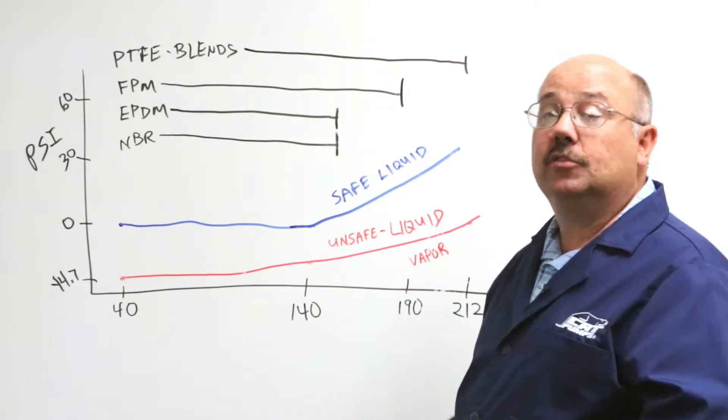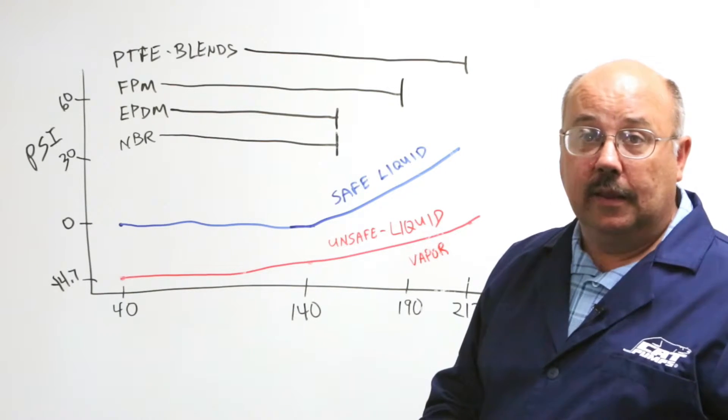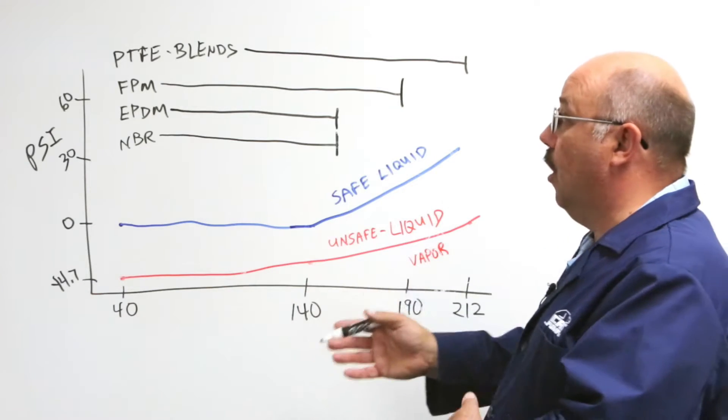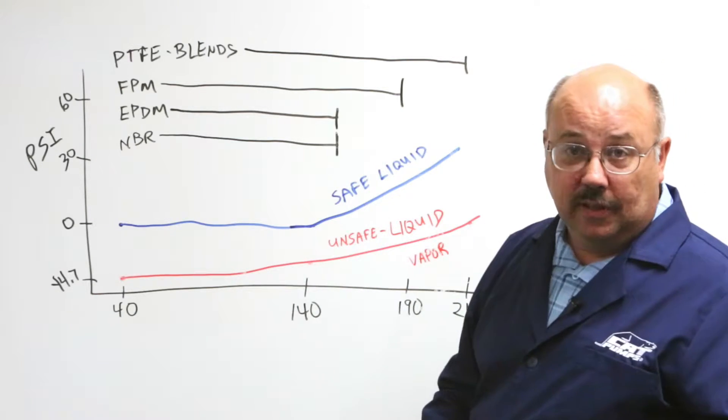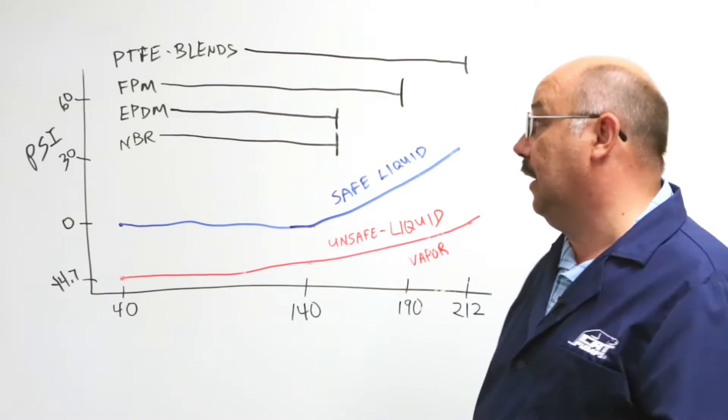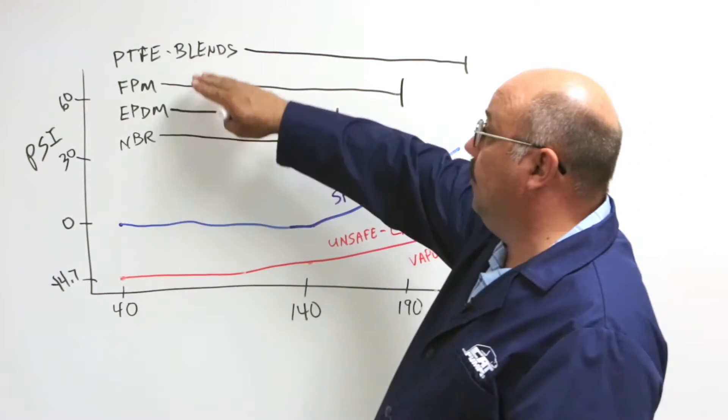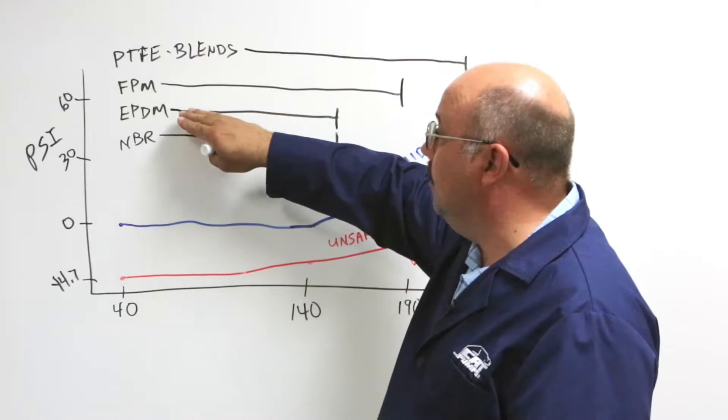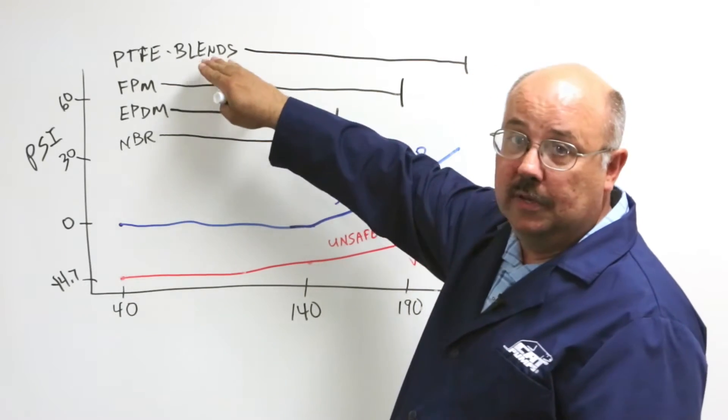And so depending on your temperature will kind of depend on which elastomer you pick. Now the elastomer also has to meet the chemical compatibility of the liquid. All of these will pump water. They're all compatible with water. But then you get into other types of liquids and chemicals in them and things like that where you have to evaluate. Is FPM the right material or EPDM or NBR or do we need the PTFE?